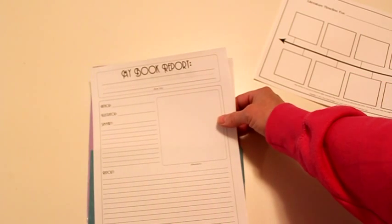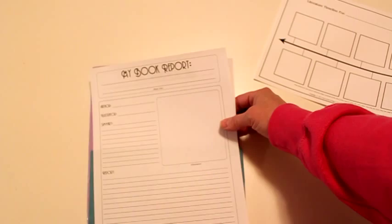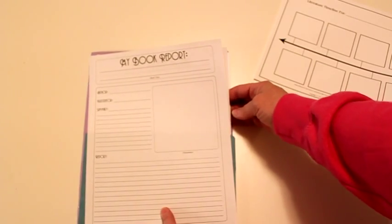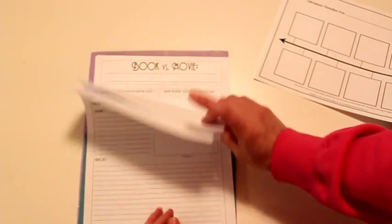And then always it includes a final book report, which is really just an overview. They list the author, the illustrator, they write a summary of it, and then they can kind of write their own thoughts on the book below here. And then if they want, they can add a picture to that too.